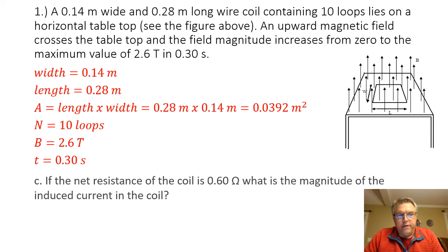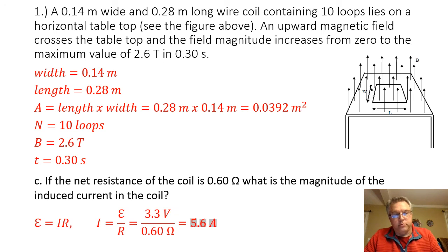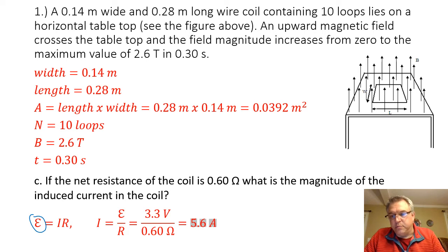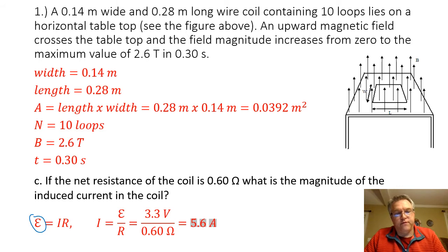Part C asks: if the net resistance of the coil is 0.60 ohms, what is the magnitude of the induced current? For this, we can use Ohm's Law. Ohm's Law is typically V equals IR, and the induced EMF — represented by the Greek letter epsilon — can be read the same as a voltage. So I can use Ohm's Law with an induced voltage as well. The current equals the induced EMF divided by the resistance, giving me a current of 5.6 amps.